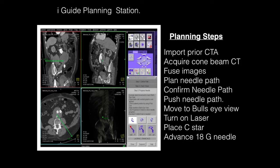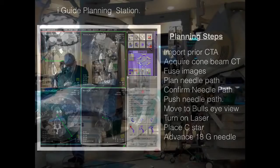We then create what's called the bullseye view, which is used to target where the needle will be inserted in the patient. This is done using a laser built into the image guidance system. We use a needle stabilizer called the C-STAR, and then we advance an 18 gauge needle to the target. Now we'll take you through these steps.